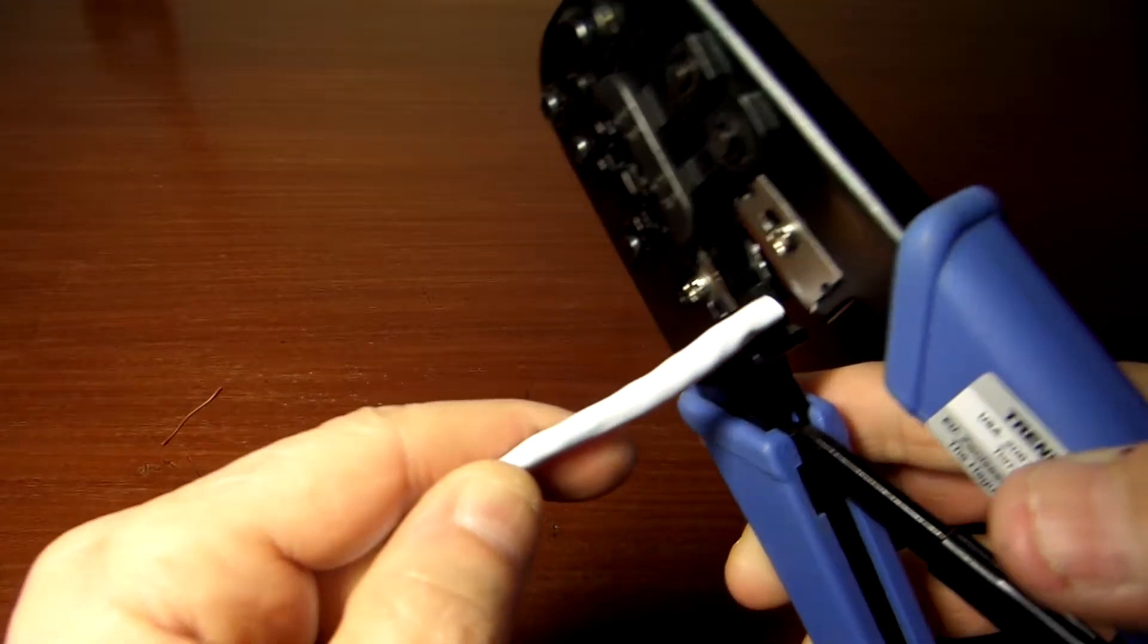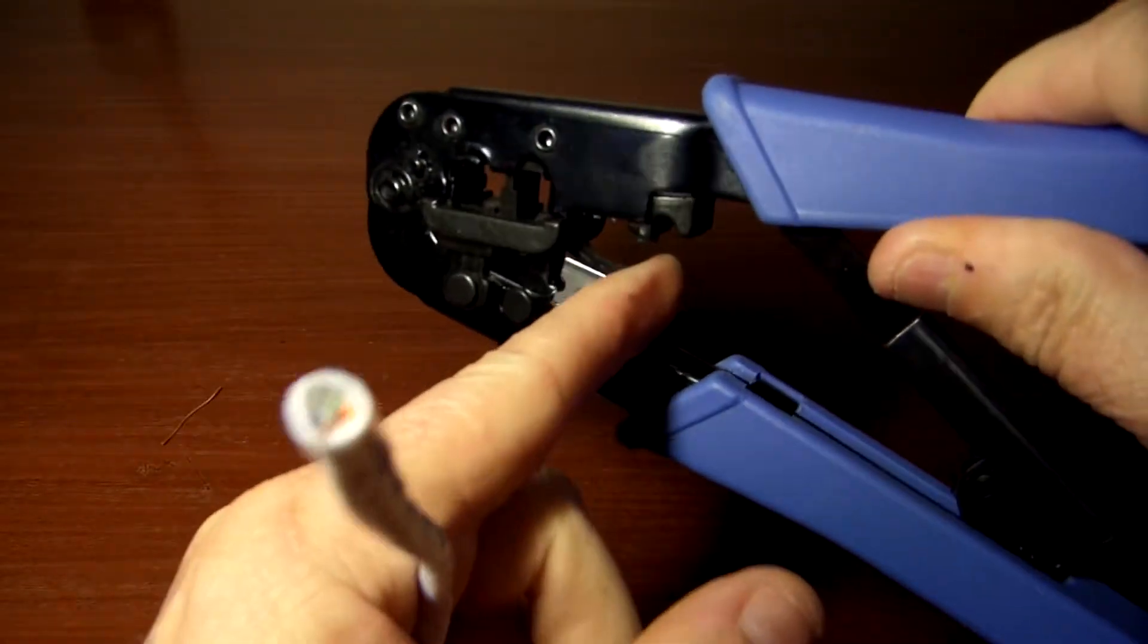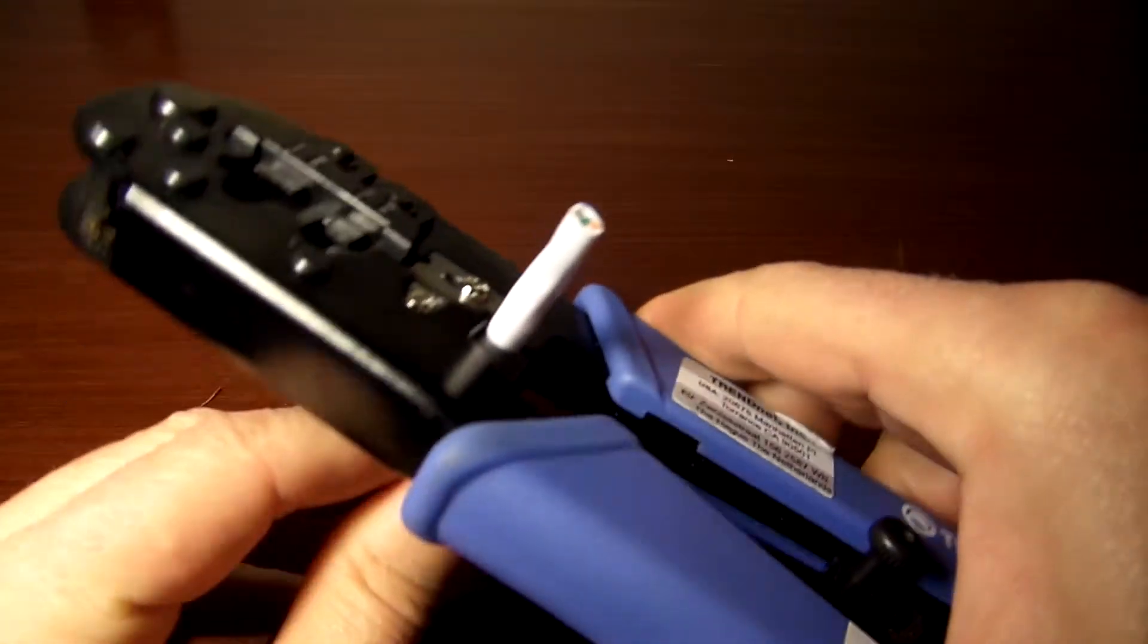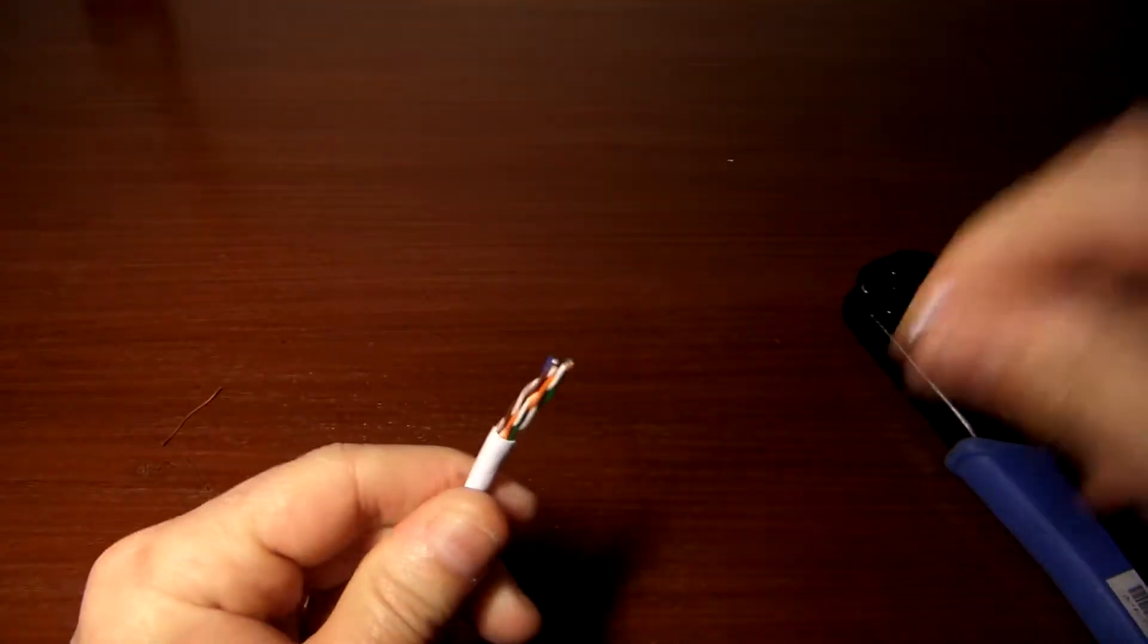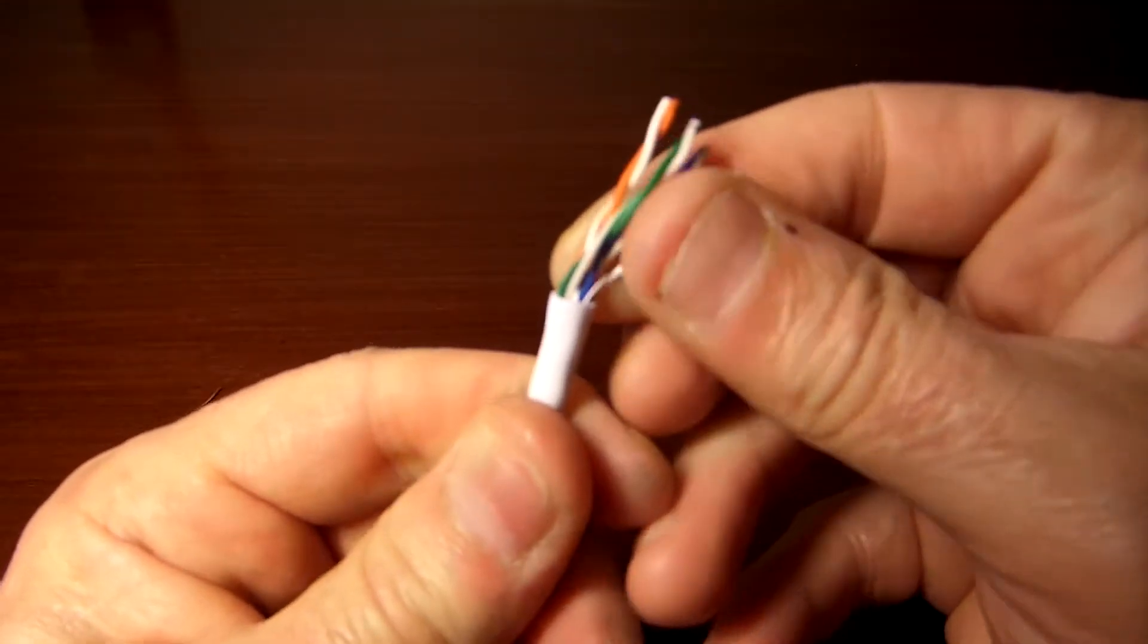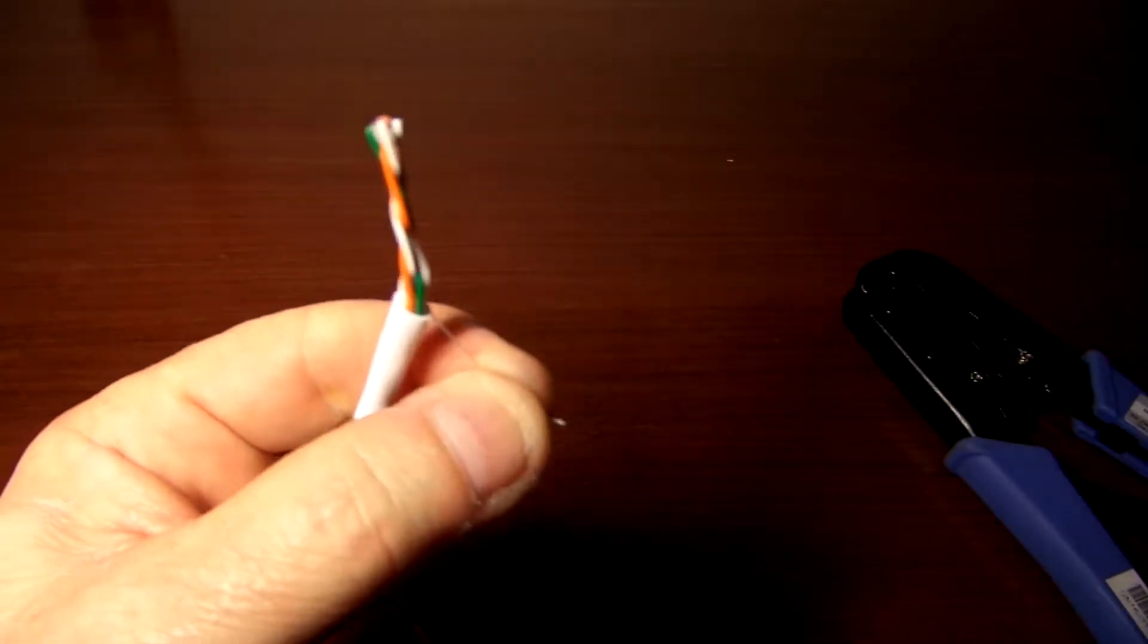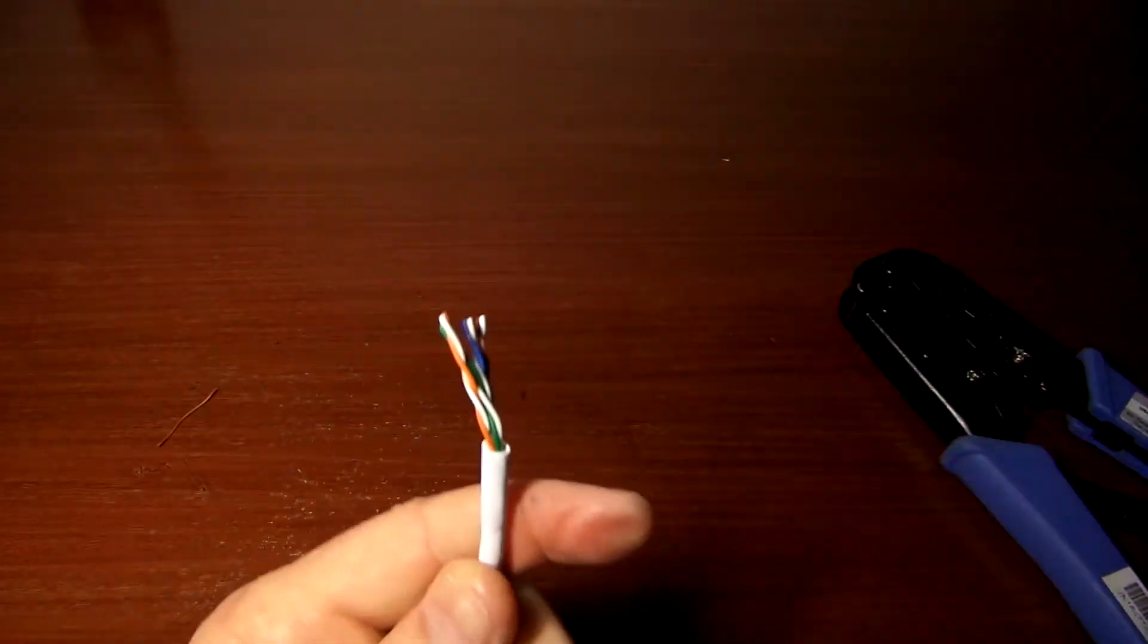The first step, using my crimping and stripping tool, I want to score the jacket so that I can remove the length of it. You want to get enough out here so that you have plenty of wire to work with. Don't want to push down real hard, you just want to slightly score this. Check the integrity of your insulation to make sure you didn't break any of it. With that done, the next thing you want to do is cut off this string that's inside the jacket.